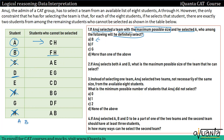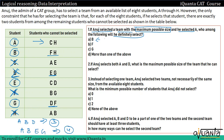अगर वो team बनाएगा A, B and D — अगर वो D को select करेगा तो फिर वो E और G को select नहीं कर पाएगा। हम इस maximum possible size को 3 कर आएगा। पर अगर वो E को select करेगा तो C और D को select नहीं कर पाएगा, साथ ही साथ वो G को भी select कर सकता है क्योंकि condition यह है कि अगर वो D और F को select ना करें — जो कि हम पहले से ही नहीं ले रहे — तो team क्या बनेगी: A, B, E and G। तो यहाँ पर maximum possible size 4 हो जाएगा।